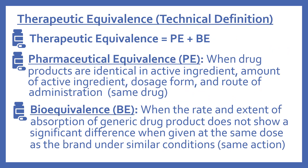Now that you have a basic idea of what therapeutic equivalence is about, let's look at a technical definition. Therapeutic equivalence is equal to pharmaceutical equivalence plus bioequivalence. Pharmaceutical equivalence, abbreviated PE, is when drug products are identical in active ingredient, amount of active ingredient, dosage form, and route of administration. Basically, you can think of pharmaceutical equivalence as the drugs being the same drug.